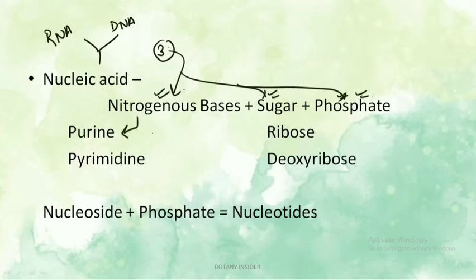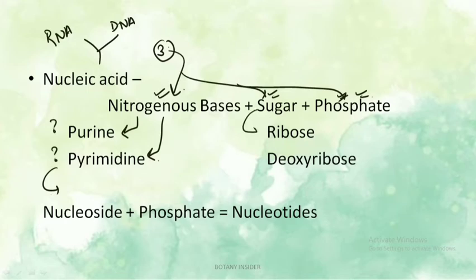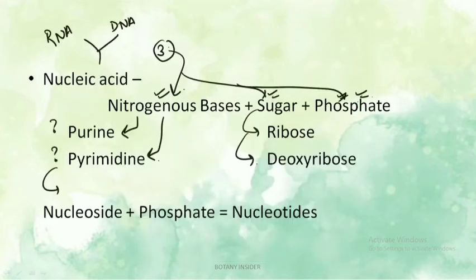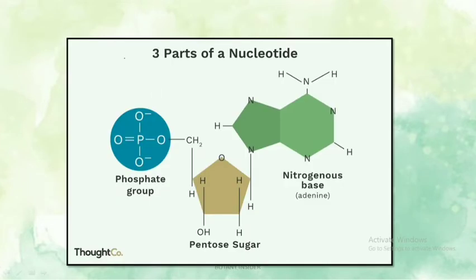The nitrogenous bases are of two types: purines and pyrimidines. The sugars can either be ribose or deoxyribose. Depending upon which sugar is present, the nucleic acid is defined as either DNA or RNA. Ribonucleic acid (RNA) contains ribose sugar, and DNA contains deoxyribose sugar.